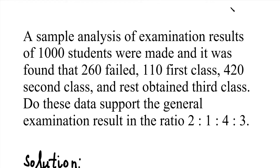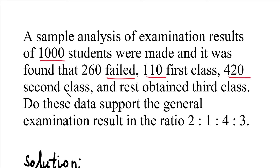Hi students. In this video, a Chi-Square test will be solved with one interesting problem. The question: an analysis of examination results of 1000 students was made and it was found that 260 failed, 110 got first class, 422 got second class, and the rest obtained third class. Do these data support the general examination result in the ratio 2:1:4:3?